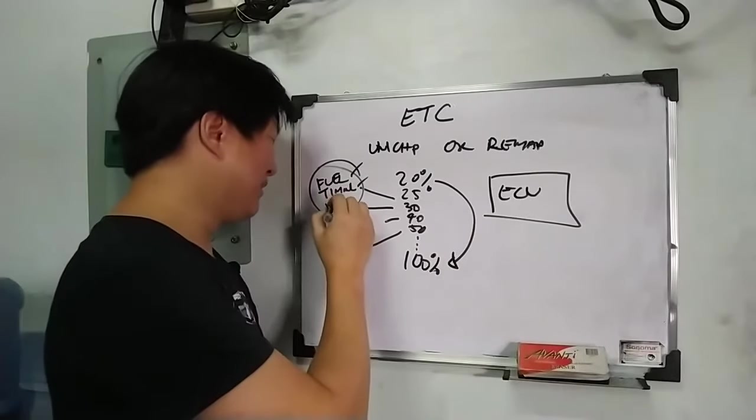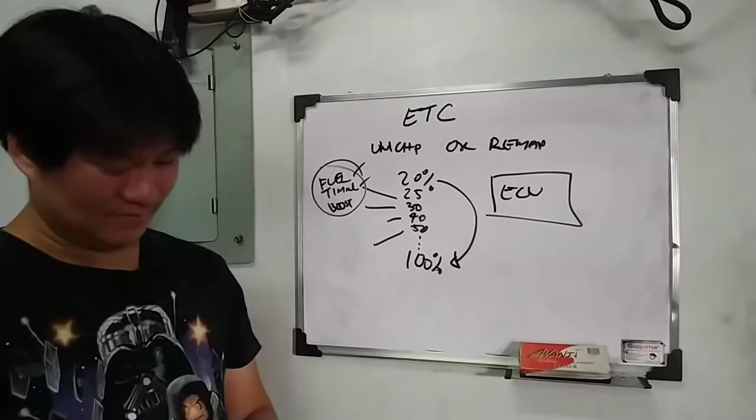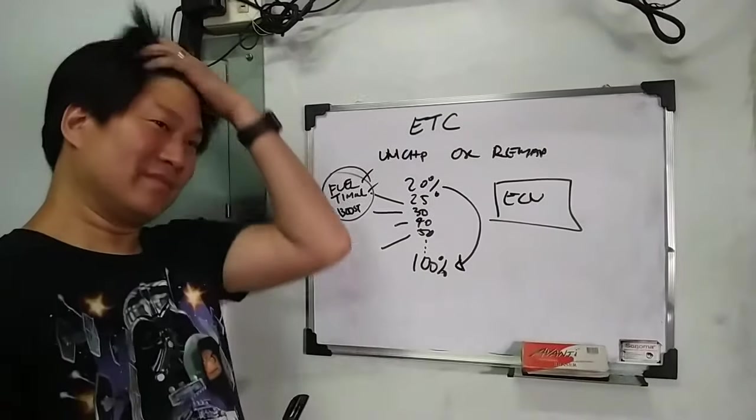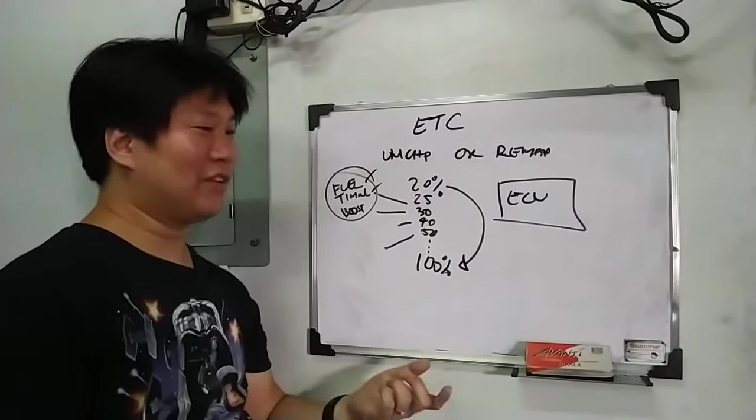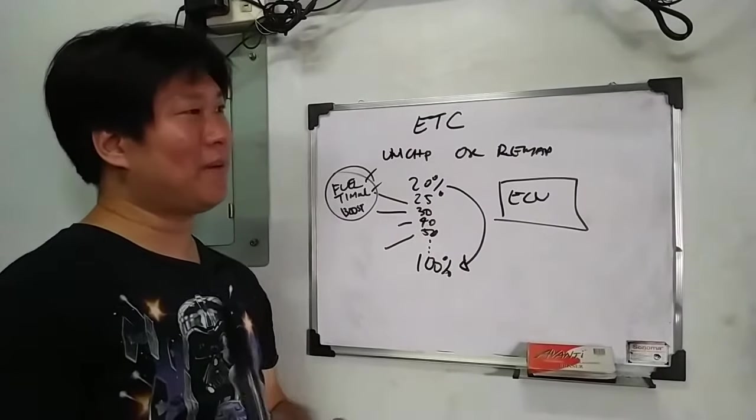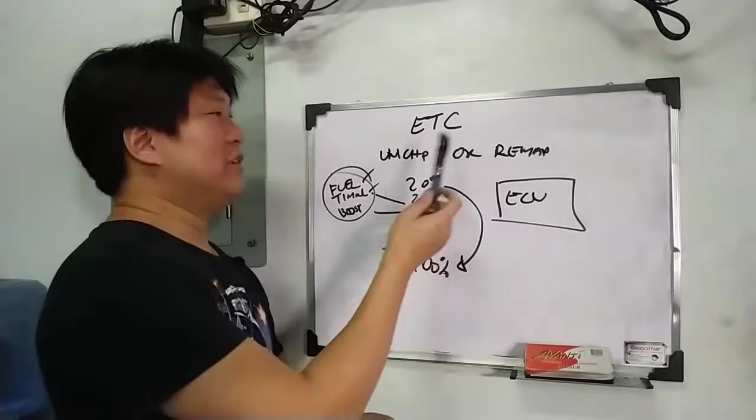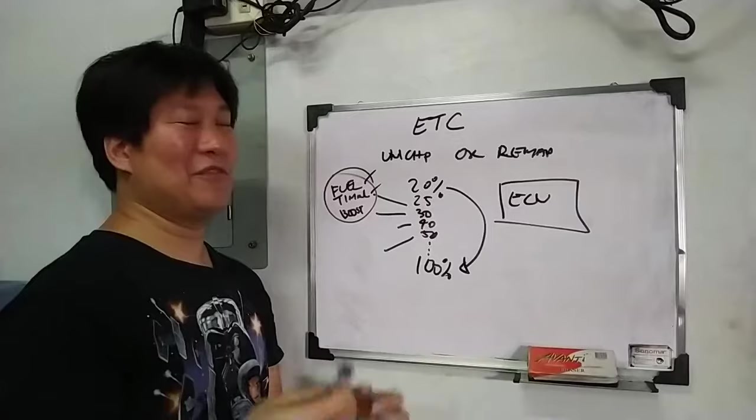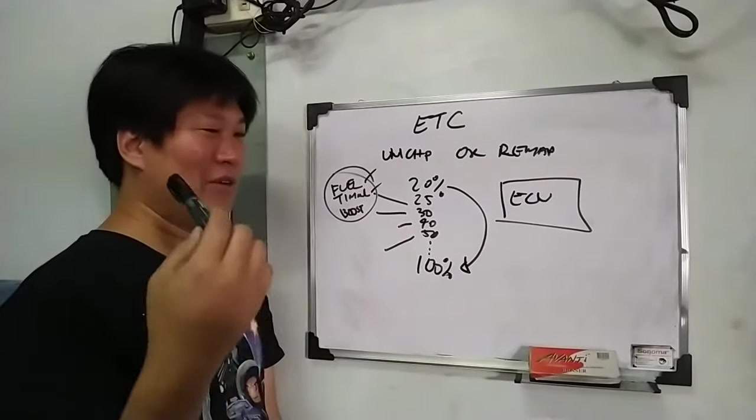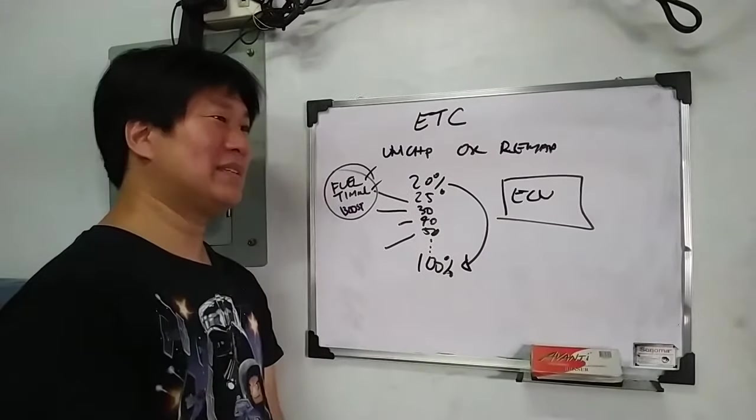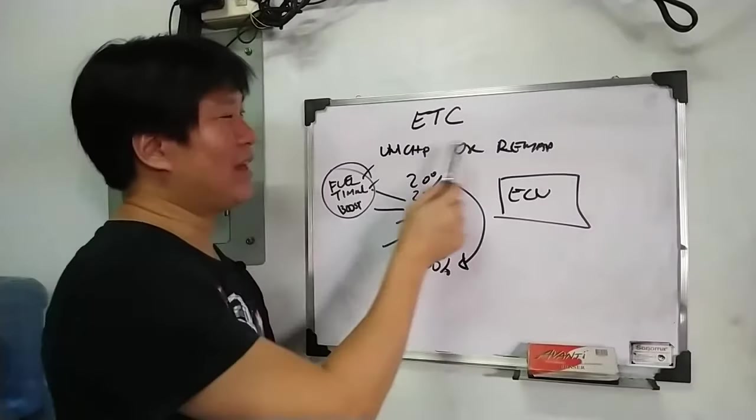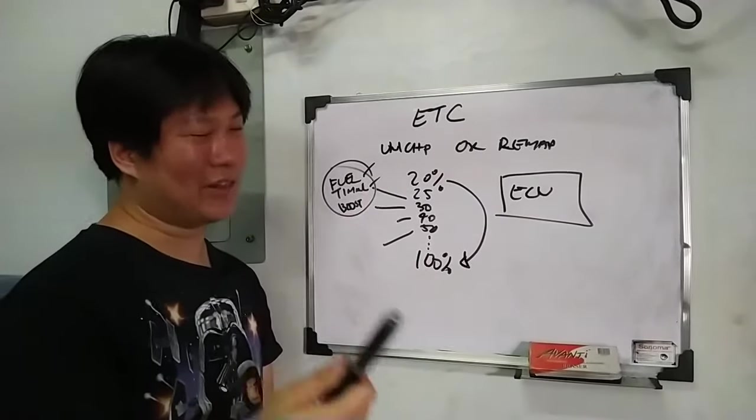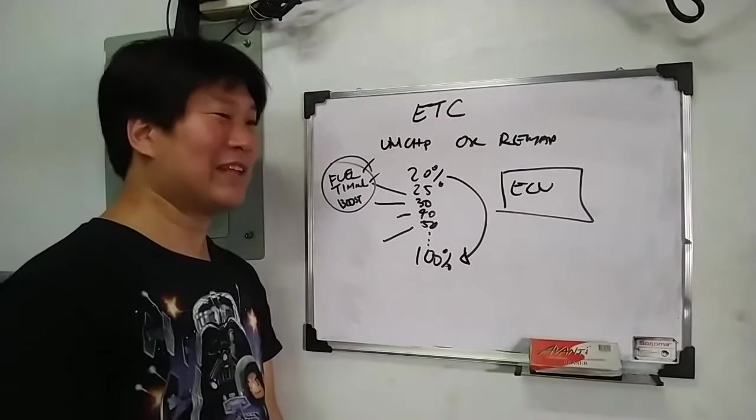So, if you guys have throttle control already and then you want more power, you can get either unichip or remap. You can sell your throttle control to somebody else. And if you still don't have throttle control to begin with, and you want better response, huwag mo na bilhin yun. Dumarecho ka na dito. Kasi sayang lang na pera pag bumili ka ng throttle control. Bebenta mo rin yun or tatapon mo lang yun.